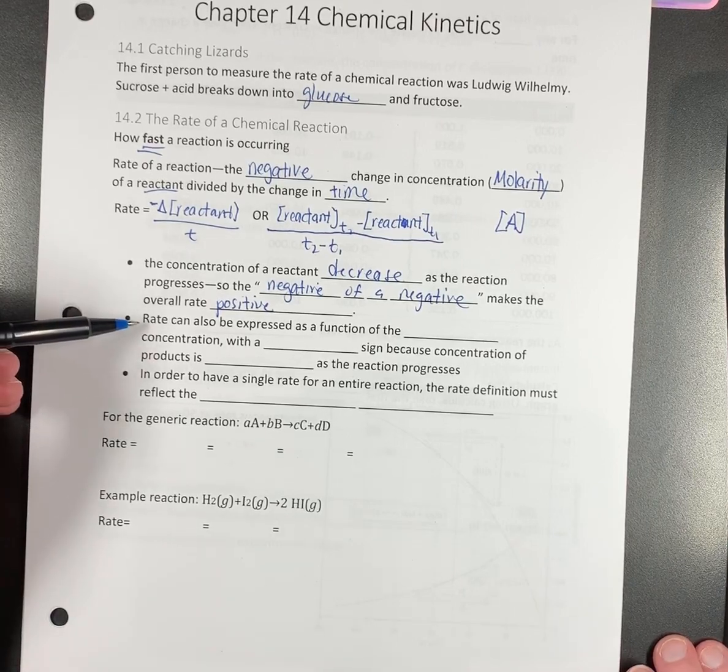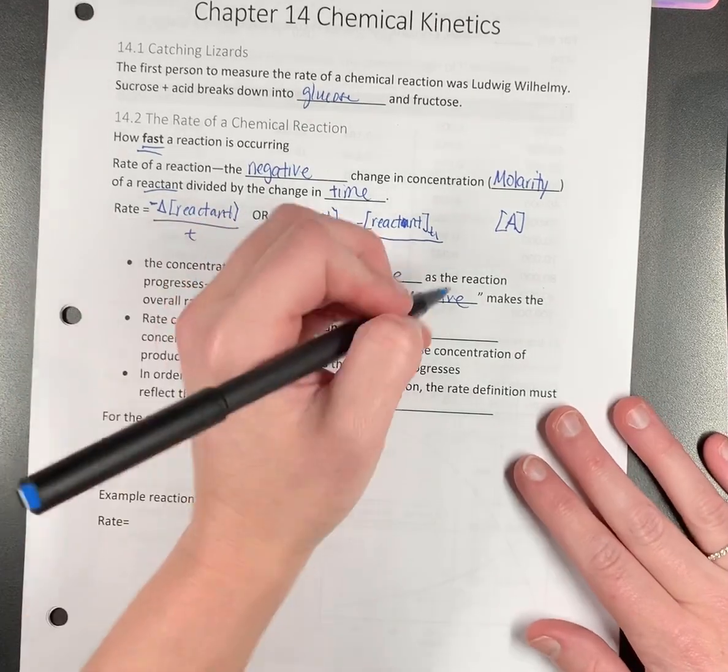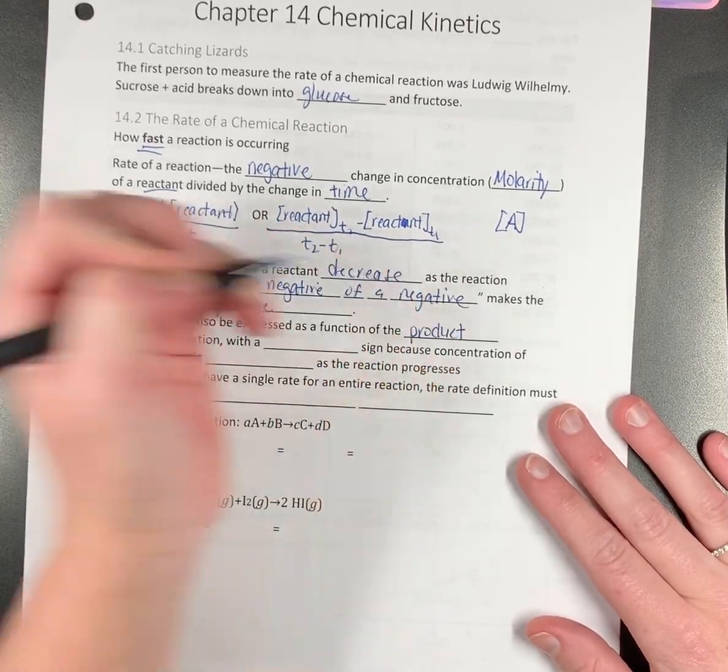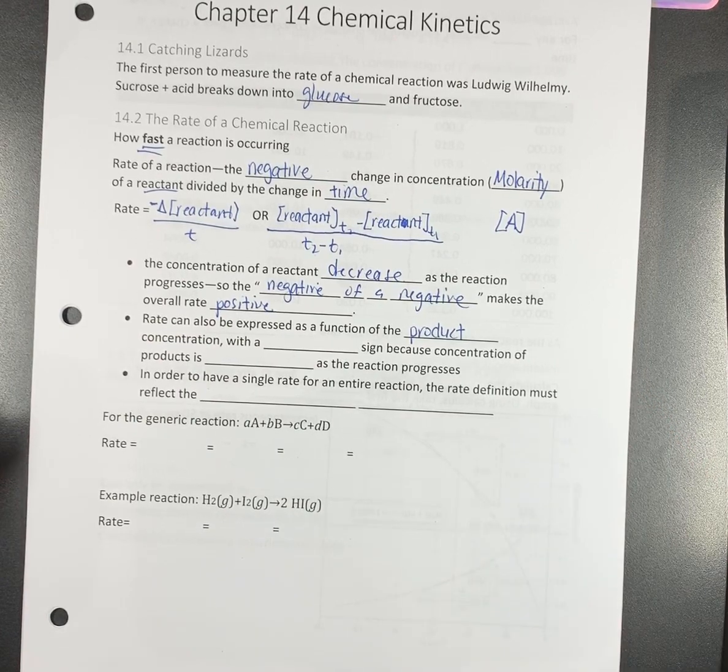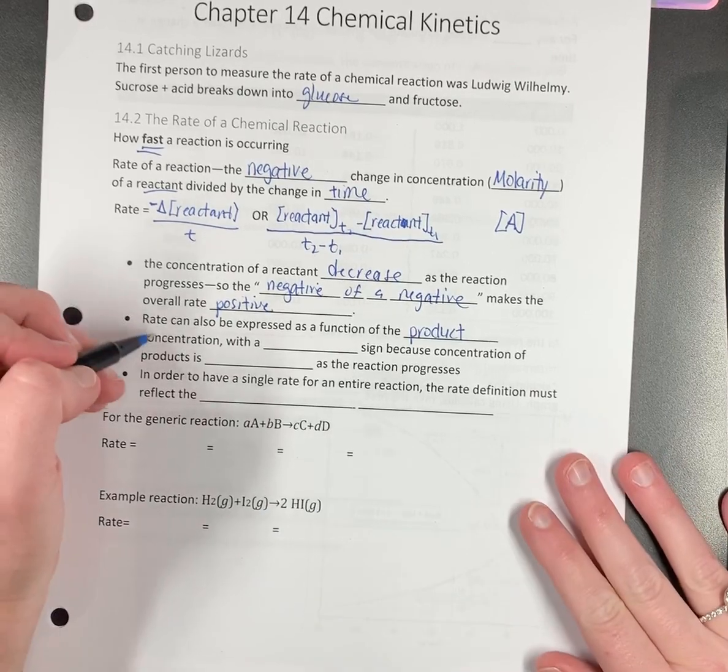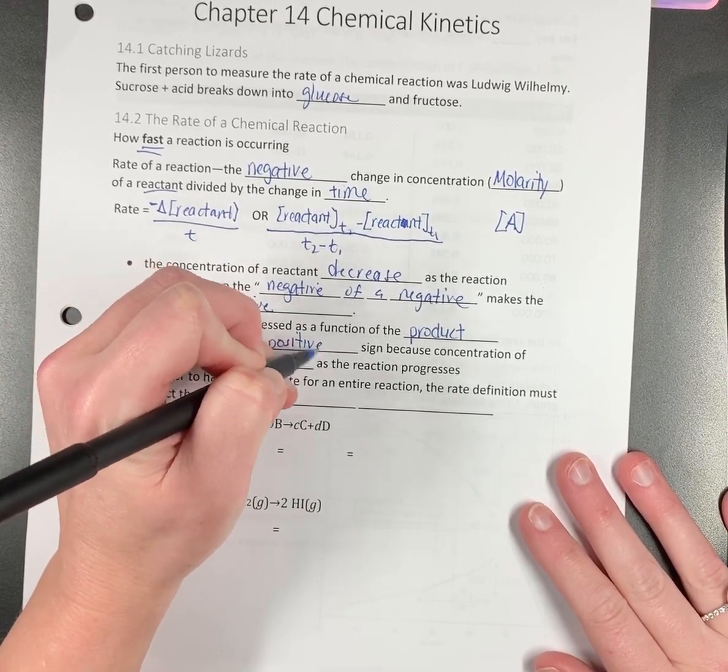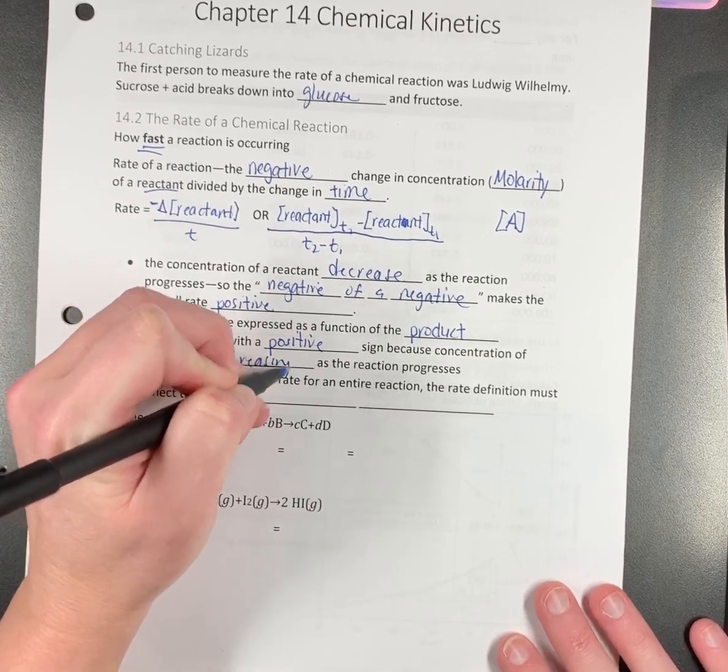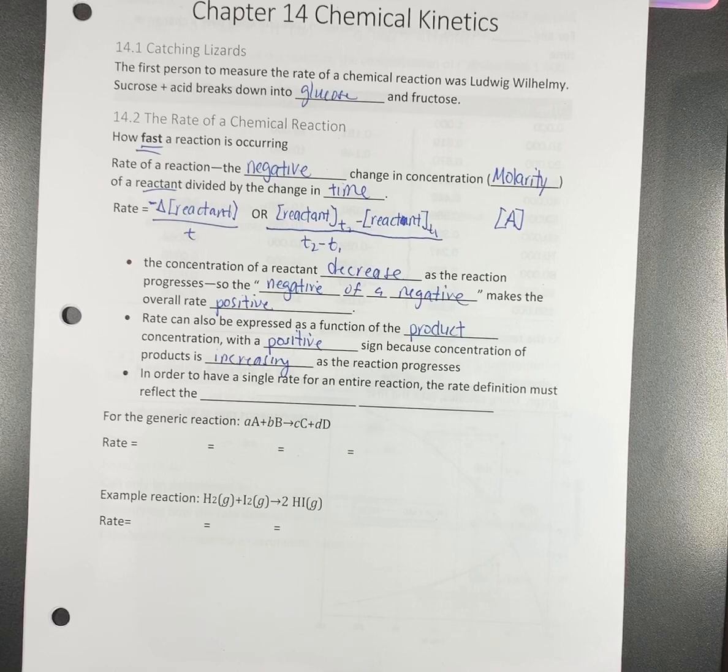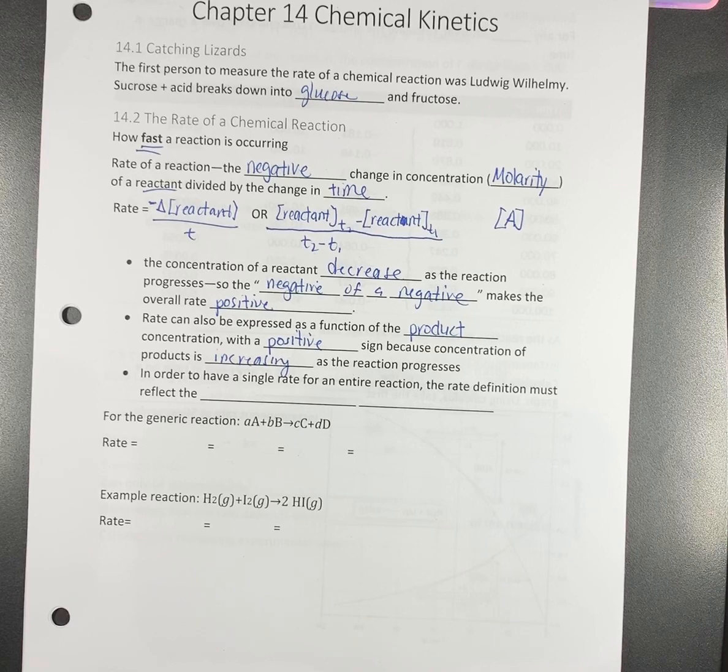You can also express your rate as a function of the product concentration. What happens as you go across the reaction to products? Get more of them. So the concentration is increasing, so you keep the positive sign because the concentration is increasing as the reaction progresses. So if you're on the reactant side you do what you got to do to make the rate positive. On the product side it's already positive. You should never have a negative rate of reaction.